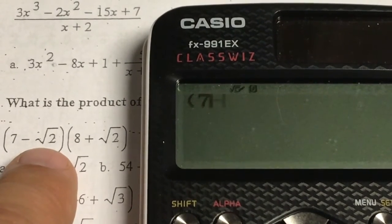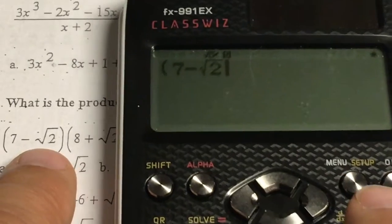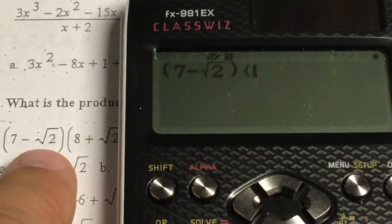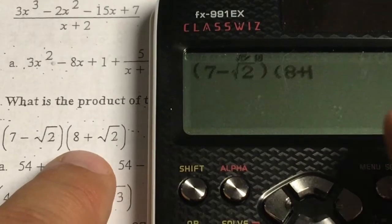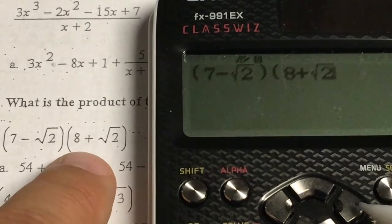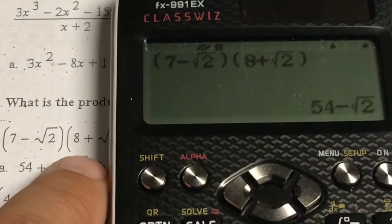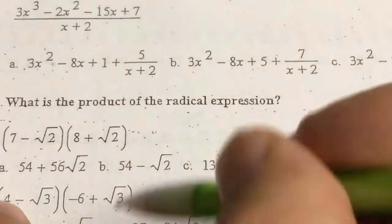Parentheses. 7 minus square root 2. You have to right arrow to get out from underneath the radical. Close parentheses. Open parentheses. 8 plus square root 2. You have to right arrow to get out from underneath the radical. See it flashing underneath the radical there? We'll have to right arrow to get out from underneath that so I can close the parentheses. Hit equals. This is your exact answer. 54 minus root 2. Choice B.